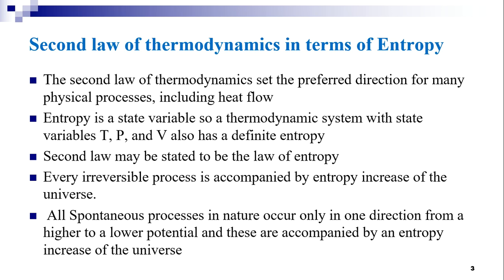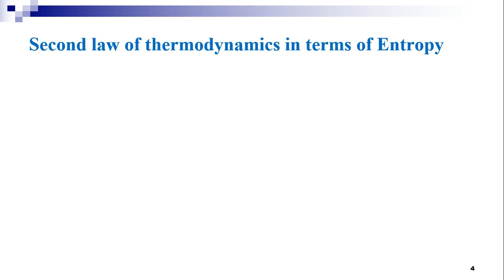Where the potential gradient is infinitesimal, that is zero in the limit, the entropy change of the universe is zero and the process is reversible. We can say the second law of thermodynamics indicates the direction in which a process takes place. A process always occurs in such a direction as to cause an increase in the entropy of the universe.